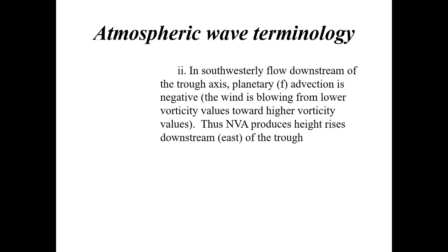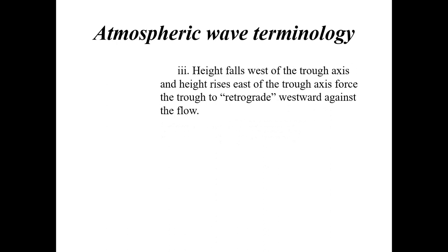So with long waves, height falls occur west of the trough axis and height rises occur east of the trough axis. This forces the trough to retrograde — meaning it moves against the westerly winds and repositions itself toward the west.